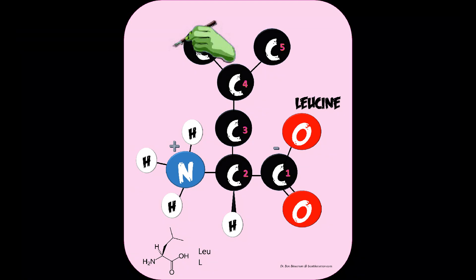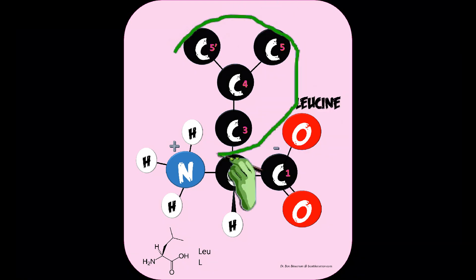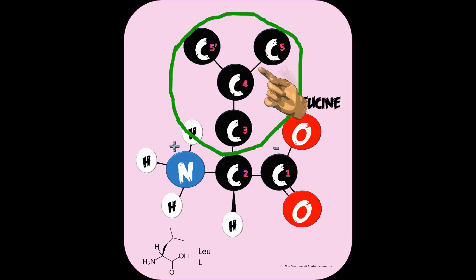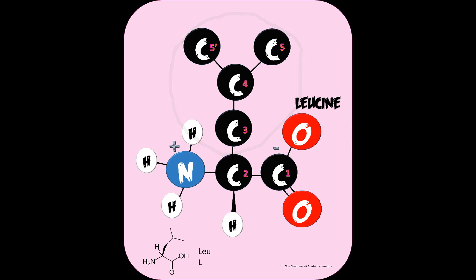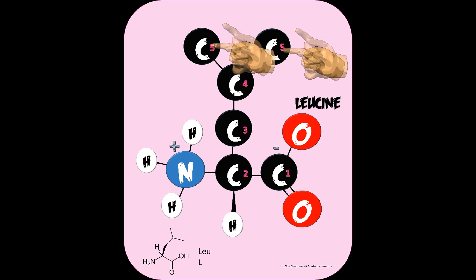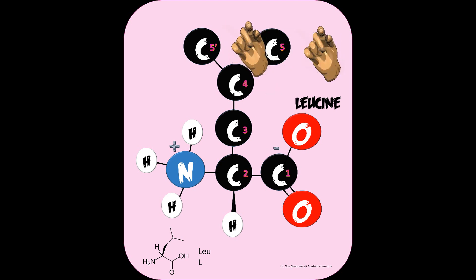The next hydrophobic amino acid is leucine. It's just like valine, but you add another carbon, giving us gamma branching. Starting from the alpha central carbon, we have the beta carbon (first carbon in the R-chain), then the gamma carbon, where the branch occurs. The actual R-chain is CH2-CH with two CH3 groups on the terminal ends. Those terminal methyl groups are delta-1 and delta-2.